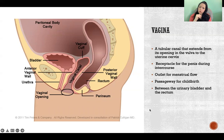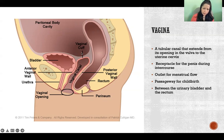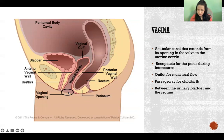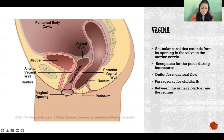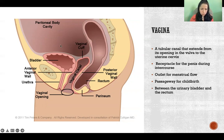The vagina is a tubular canal that extends from its opening in the vulva to the uterine cervix. Here is the opening to the vagina, located within the vulva — I have another video about that if you want to review. There's the vaginal canal, and it connects to the uterus right here. The uterus is anterior to the rectum and superior to the urinary bladder. The vagina is the receptacle for the penis during intercourse, the outlet for menstrual flow, and the passageway for childbirth. The vagina is located between the urinary bladder and the rectum.